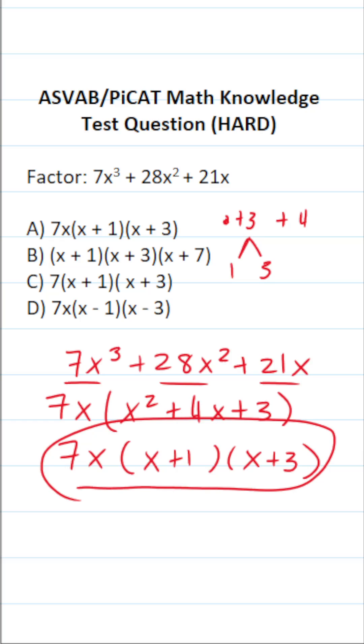as 7x(x + 1)(x + 3), which, as it happens, is answer choice A.